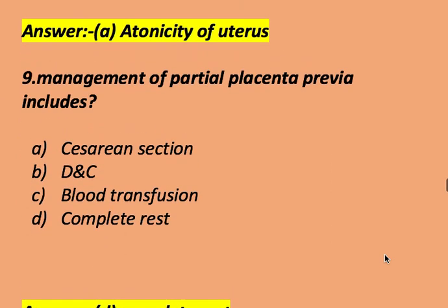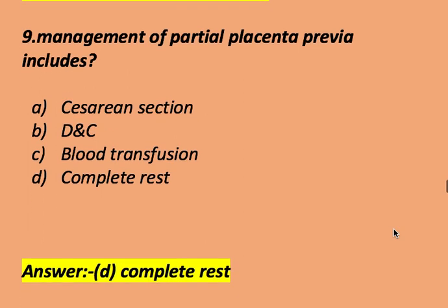Management of partial placenta previa includes: caesarean section, D&C or dilatation and curettage, blood transfusion, and complete rest. The right answer is complete rest.